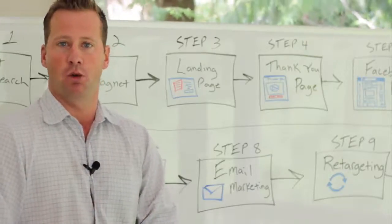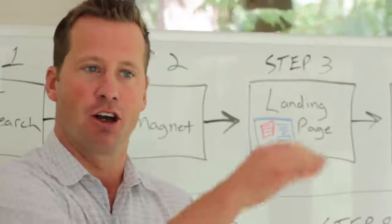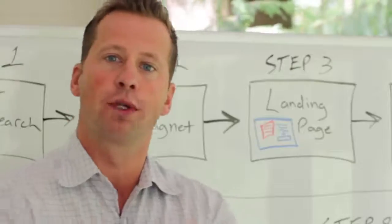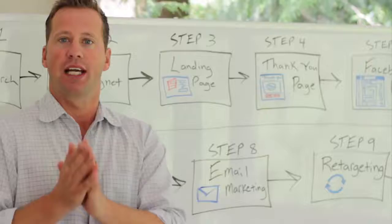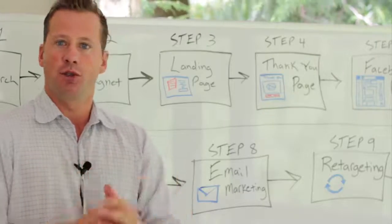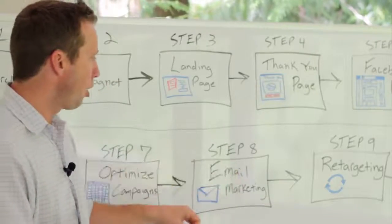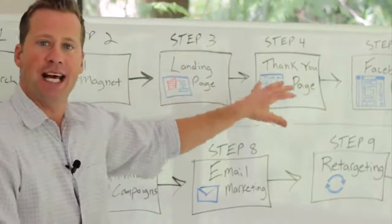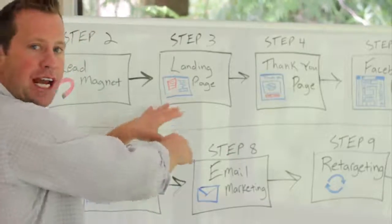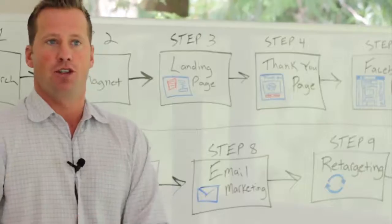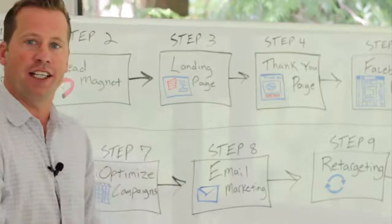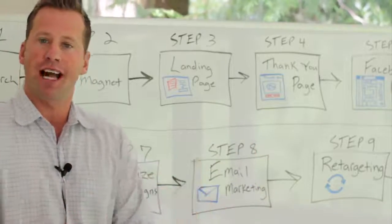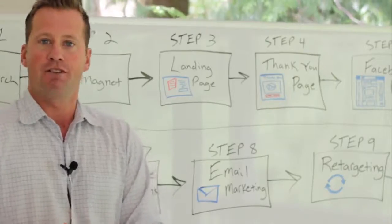Have you ever been to Amazon or a big e-commerce site to buy a product, then left and later on a news site or Facebook you see an ad for that product? That's called retargeting or remarketing, and we can do that with Facebook. It's one of the biggest impact things you can do to get conversions. You're going to use email marketing and retargeting to bring people back — people that opted in but maybe didn't buy yet, or people that visited your blog to bring them to your landing page. We want to use Facebook to find our exact target audience, then use remarketing and email marketing to build that trust.